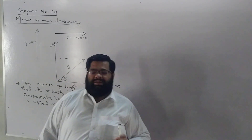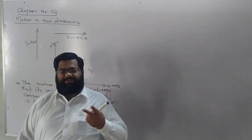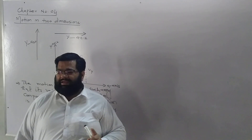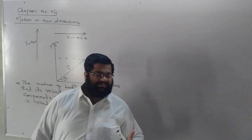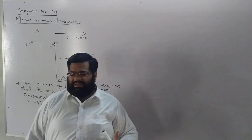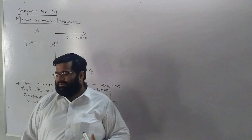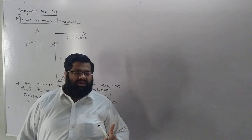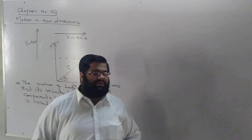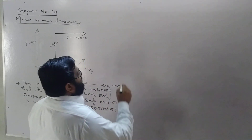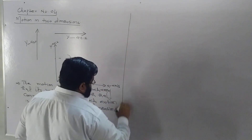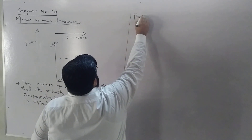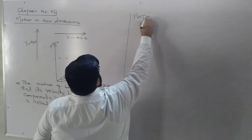This chapter is divided into two portions: projectile motion and circular motion. Projectile motion is motion in two dimensions, and circular motion is also motion in two dimensions. We will start with the first portion, which is projectile motion.